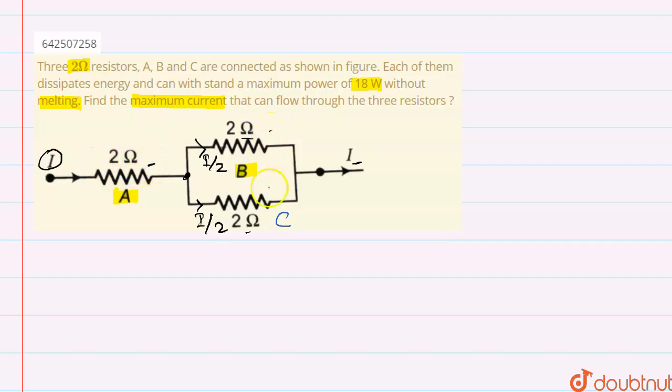So we can say that if this resistor survives, then these two resistors will survive because the current in resistor A is maximum - it is I itself, and in B and C the current is reduced to half. So if resistor A survives, then all the resistors survive.